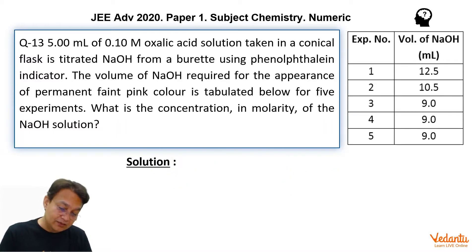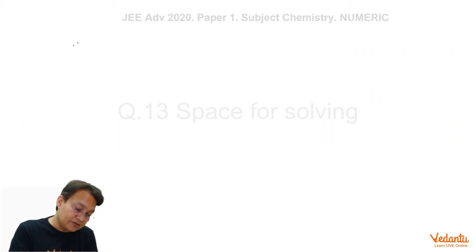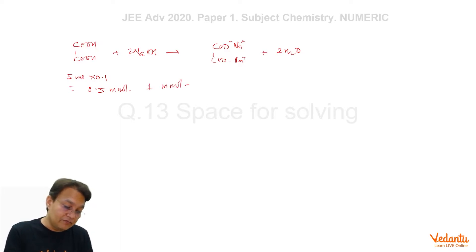If you solve it by mole method, what you have to do is write the full equation which is COOH-COOH plus 2 NaOH gives you COO⁻-COO⁻ plus 2 Na⁺ plus 2 H₂O. That means 5 ml times 0.1 which is equal to 0.5 millimole of this will require 1 millimole of NaOH. That will be the way of mole concept, and this way you have to balance this equation and do it by the mole way.